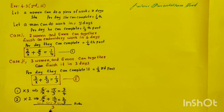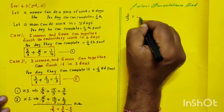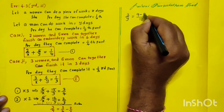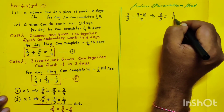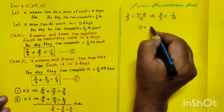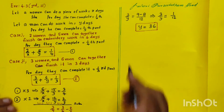So 3/Y equals 3/4 minus 2/3. The LCM of 4 and 3 is 12. That gives 9/12 minus 8/12 equals 1/12. So 3/Y = 1/12. By cross multiplication, Y = 3 × 12 = 36. So Y equals 36.